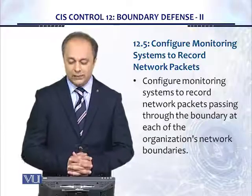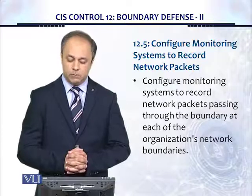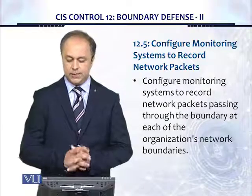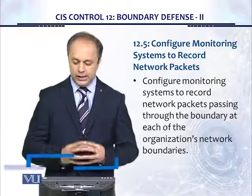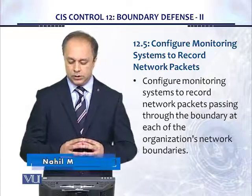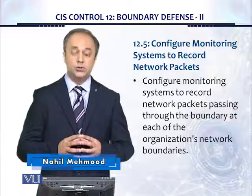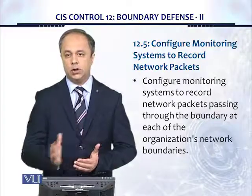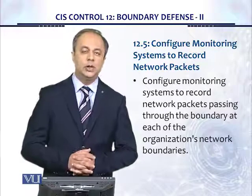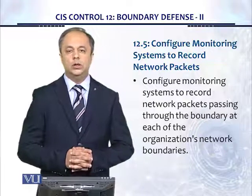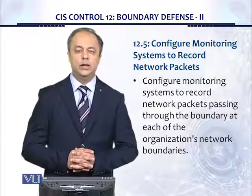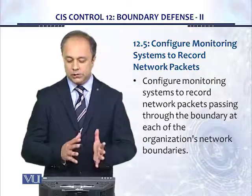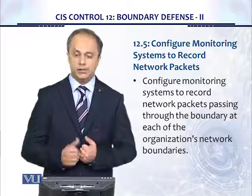Control 12.5 tells us to configure monitoring systems to record network packets passing through the boundary at each of the organization's network boundaries. This monitoring system can be a logging system which monitors all of the packets and logs all of that traffic, so that once we have an incident or need to look at traffic patterns or drill down on a particular event, that configuration monitoring system is able to provide us the necessary information.